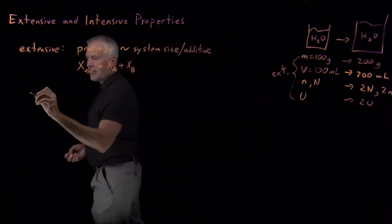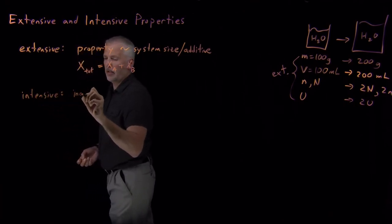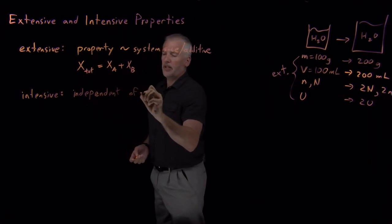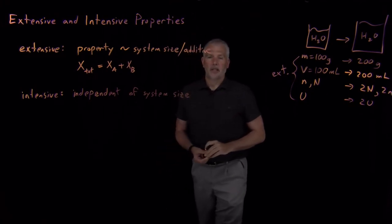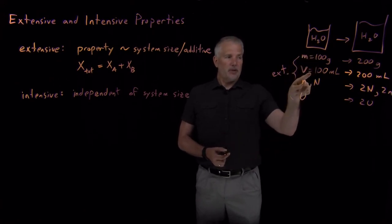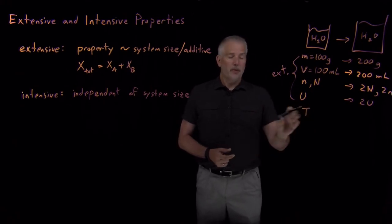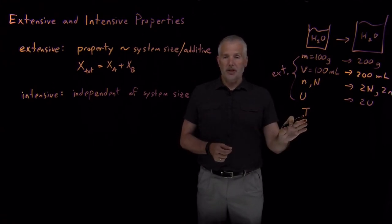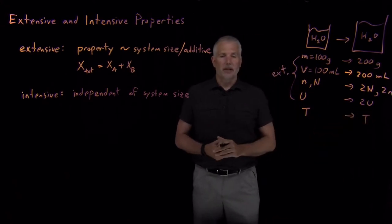That's different from an intensive property, which doesn't change when I change the system size — it's independent of system size. For example, if that beaker of water is at 300 Kelvin and I take two beakers both at 300 Kelvin and combine them, their temperature isn't 600 Kelvin. I don't add the temperatures together; the temperature remains the same.